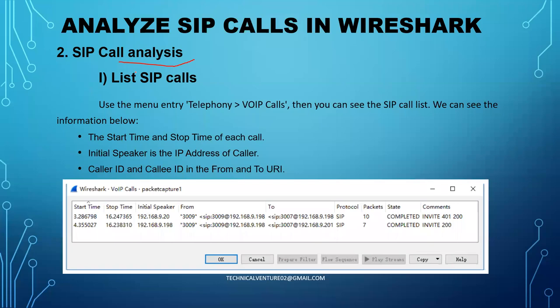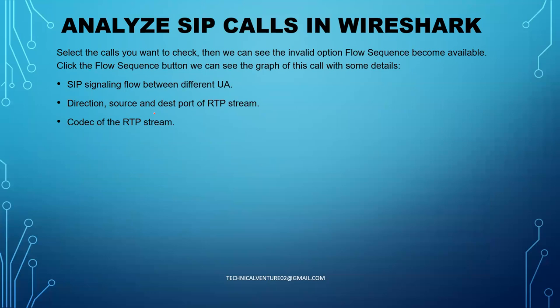Now let's move to the next step — SIP call analysis. First is listing SIP calls. Go to Telephony > VoIP Calls, and you will see the SIP call list. Then you need to select the calls you want to check. When you select one, the 'Flow Sequence' option becomes available so you can see the call flow sequence.